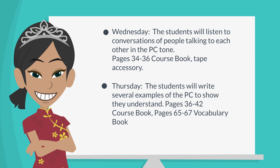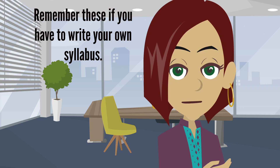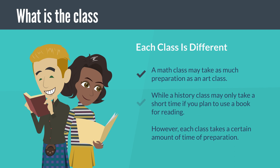Wednesday: the students will listen to conversations of people talking to each other in the present continuous tone — pages 34 to 36, course book tape accessory. Thursday: the students will write several examples of the present continuous to show they understand — pages 36 to 42, course book; pages 65 to 67, vocabulary book. Friday: the students will have a review test to ensure they understand the present continuous. If you have to write your own syllabus, you must remember a few points.